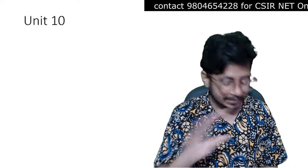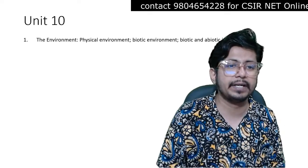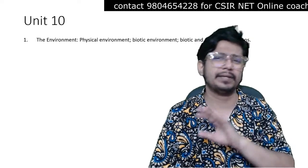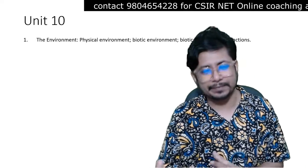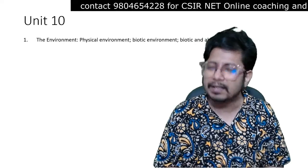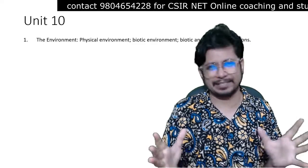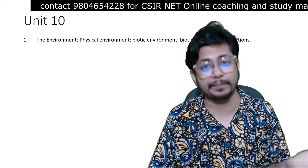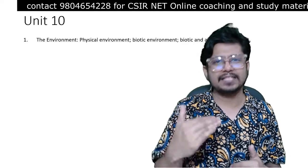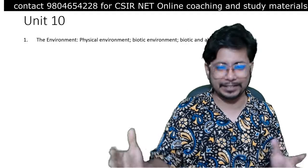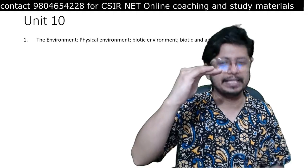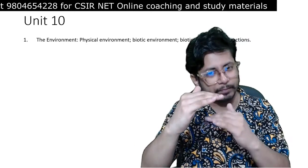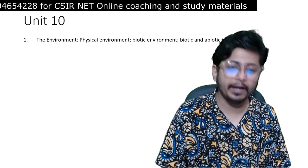The Unit 10 CSIR NET Life Science syllabus starts with the environment — physical environment, biotic and abiotic factors. This is a topic from plus-two level and not that critical in the exam. As per our color-coding rule: green is most important, yellow is moderately important, and red is least important.